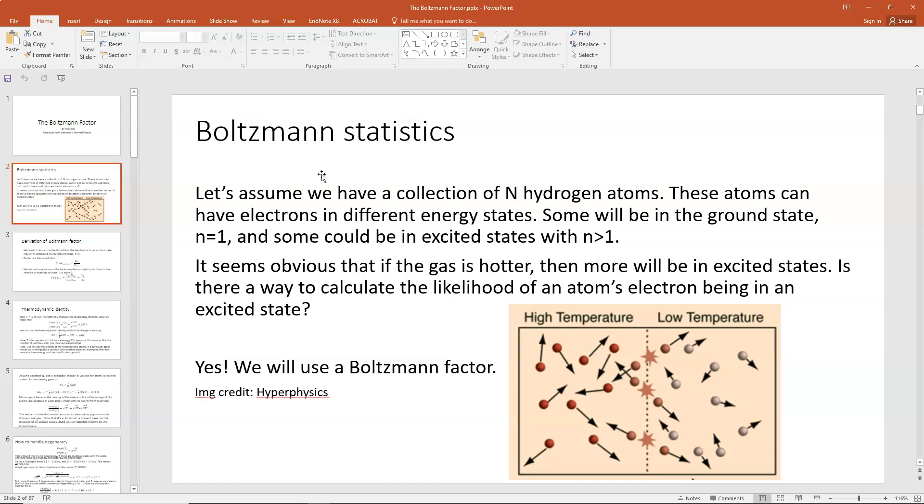So let's talk about Boltzmann statistics. At the very beginning, just picture it this way: let's say we have a collection of N atoms, for example hydrogen atoms, which we understand the structure of pretty well. These atoms can have electrons that are in different energy states. Some of those electrons might be in the ground state, n=1, and some could be in excited states with n greater than 1. It seems kind of obvious that if your gas gets hotter, then you'll have more energy to excite those electrons into excited states. So if you get a hotter gas, then more of those hydrogen atoms should have electrons in excited states.